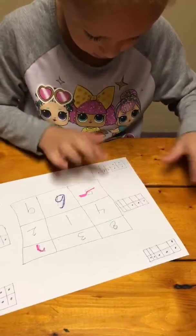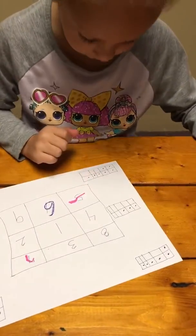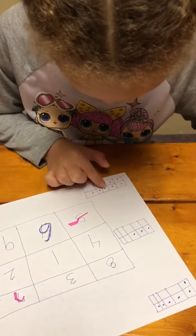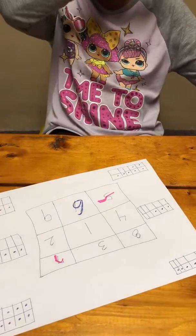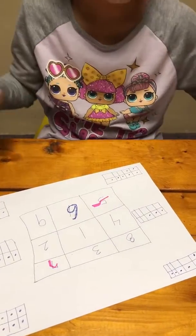And this one? Well, how do you know that? Do you want to count it? Yeah. One, two, three, four, five, six, seven. Beautiful.